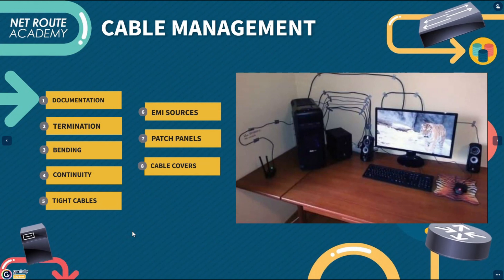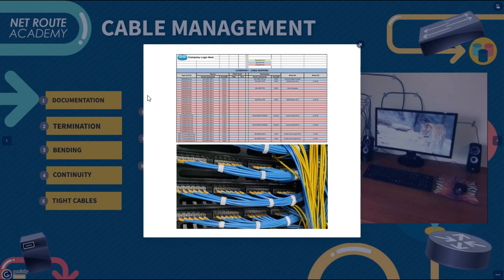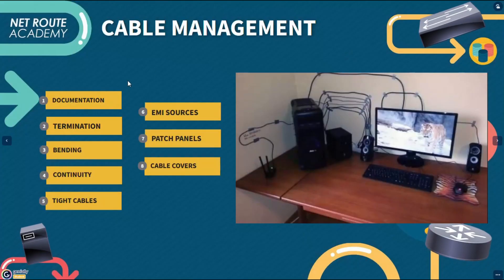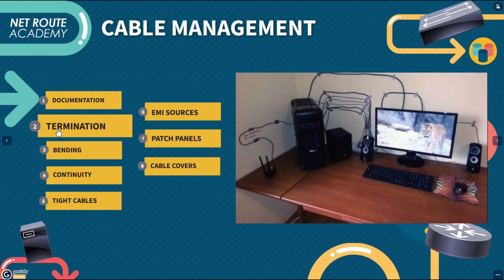Here are some cable installation tips to help prevent physical layer failures. First is documentation — every data port, jack port, patch panel, and connector or circuit should be labeled in a documented manner. I prefer to use color-coded cables for different purposes; for example, yellow for data and blue for phone lines. Be certain to update your documentation as you make changes to the network. The more you document, the easier it will be to troubleshoot, move, or add cable segments in the future.